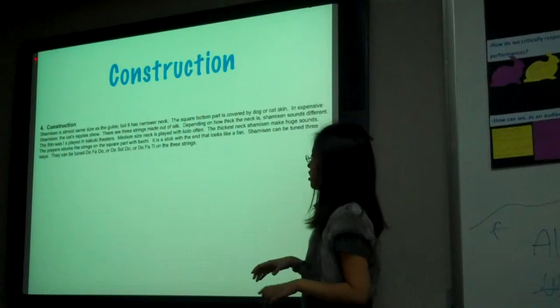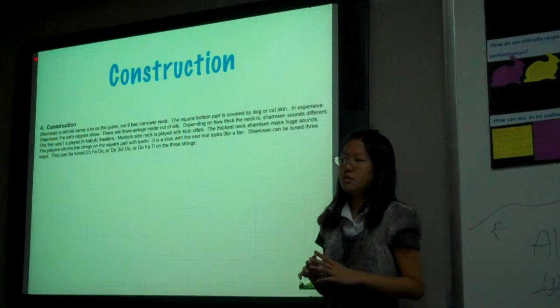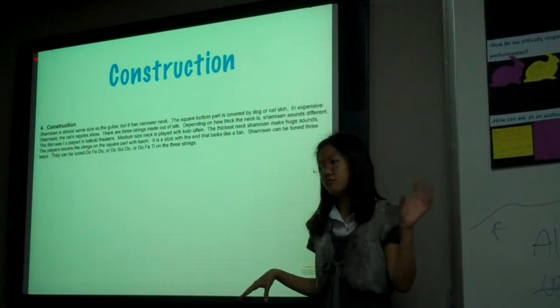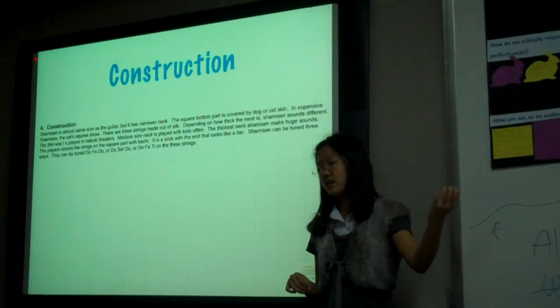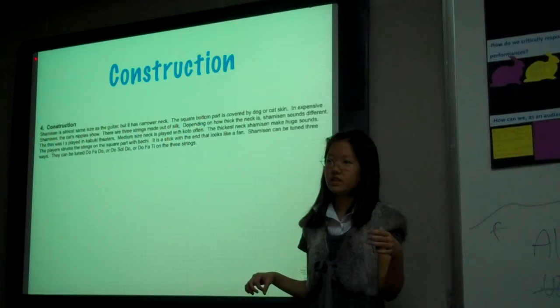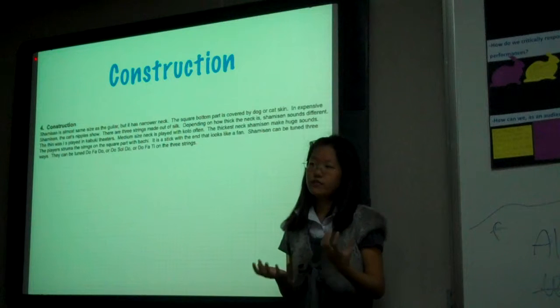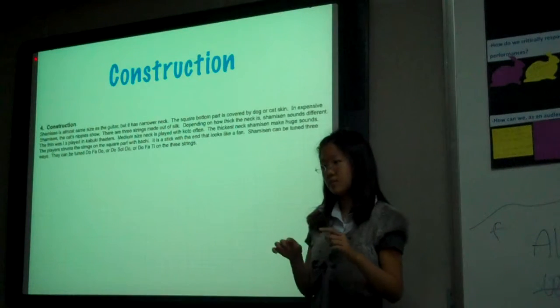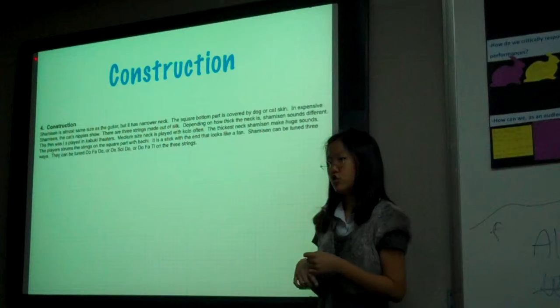For construction, the shamisen has a square-shaped body with a long neck. Mostly, it's made out of dog or cat skin. If there's a dent in the shamisen, the spot of the cat can be shown.